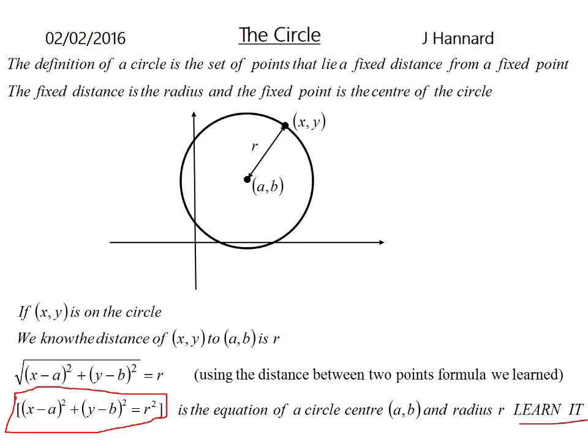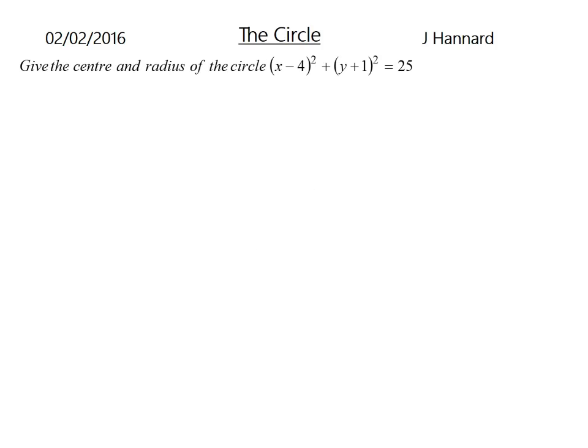You might already notice that the signs have been reversed for A and B, which is always the case with circles, and that's something to remember. So give the centre and radius of the circle with X minus 4 squared plus Y plus 1 squared equals 25.